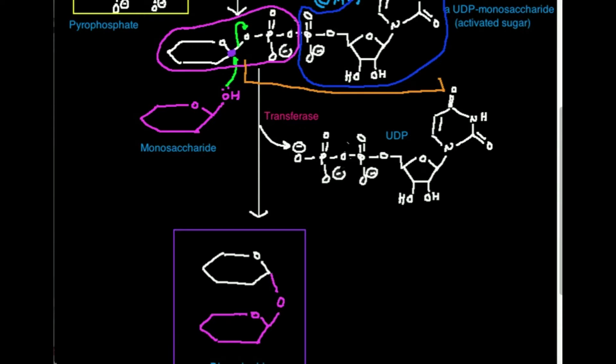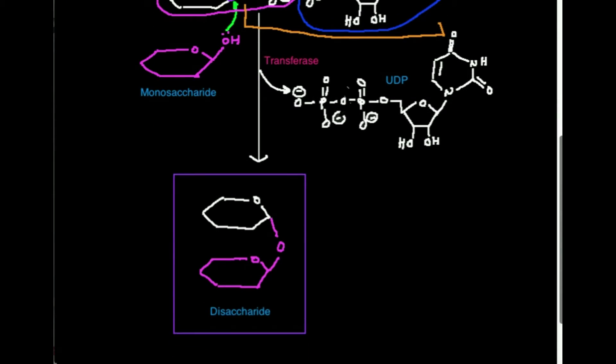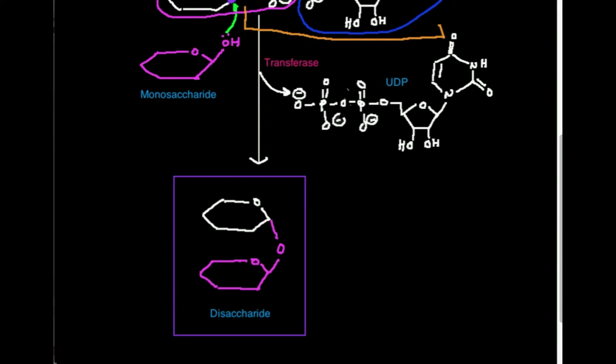And what I have effectively created is I have created a bond between both of those monosaccharides. And because I condense two monosaccharides, I now have what is referred to as a disaccharide. And that's very important.